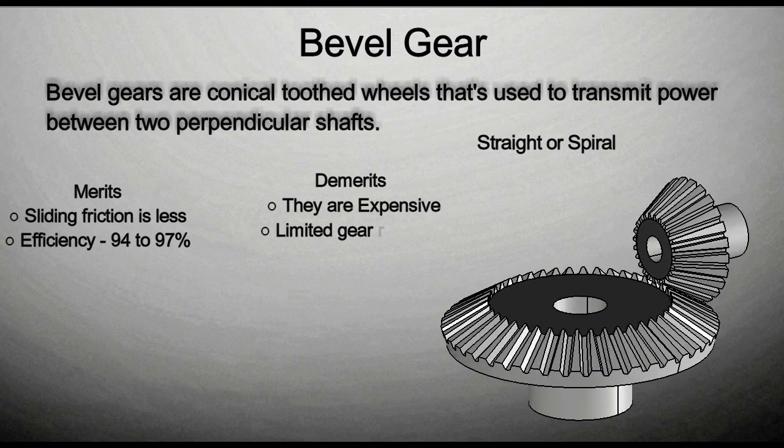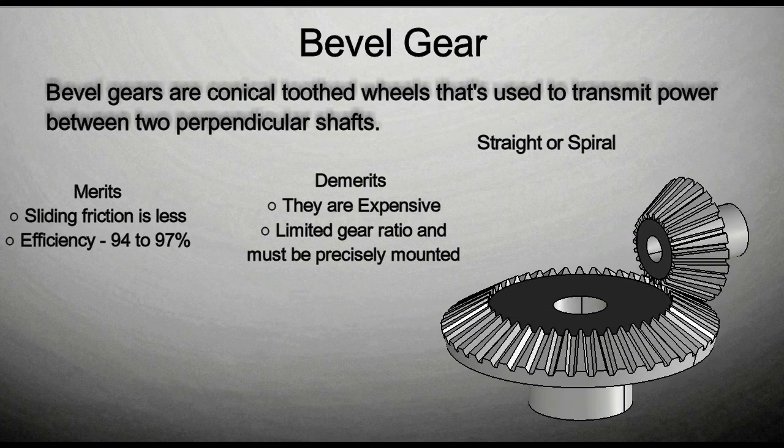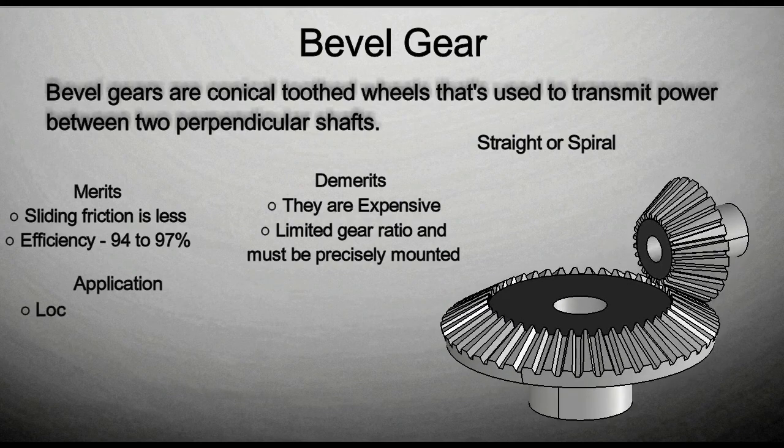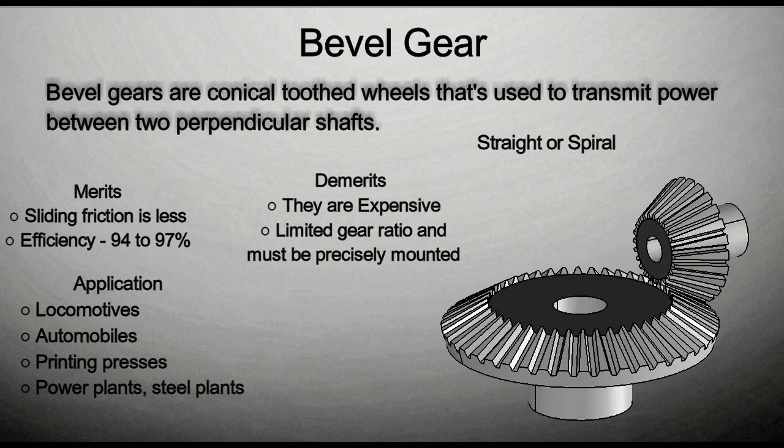Demerits are, they are expensive, limited gear ratio and must be precisely mounted. Bevel gears are used in locomotives, automobiles, printing presses, power plants, steel plants and in few more.